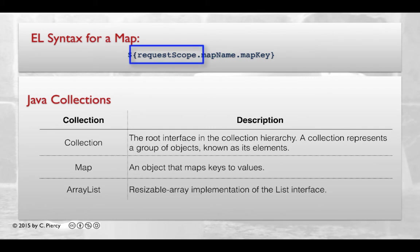If we want to state it, we can explicitly put the scope, for example, the request scope. This would be followed using dot notation by the name of the particular map object, followed by the key.